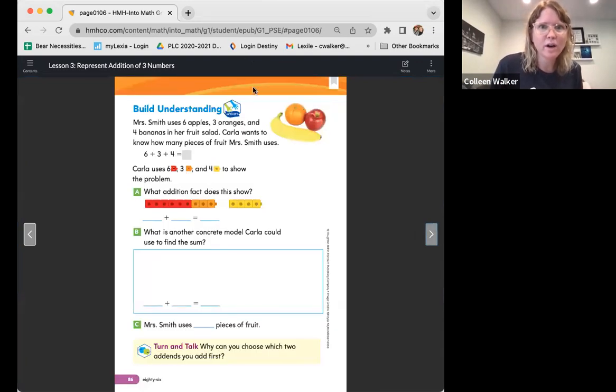Mrs. Smith uses six apples, three oranges, and four bananas in her fruit salad. Carla wants to know how many pieces of fruit Mrs. Smith uses. I love how some of you are already circling your numbers. Six, three, and four are so important. Carla wants to know how many pieces of fruit, so that gives us a clue that we need to add. It even set up the equation for us: six plus three plus four. Carla uses six red cubes, three orange cubes, and four yellow cubes to show the problem. What addition fact does this show?